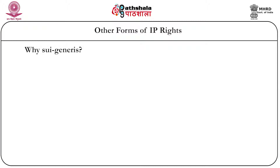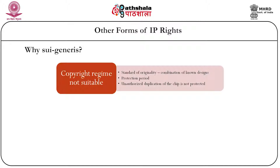But why sui generis for semiconductor chips? The copyright regime seems unsuitable. The standard of originality required for copyright law is distinct from that required for semiconductor chips, where originality involves a combination of known designs. The protection period under copyright — life plus 60 years — is seemingly high, whereas semiconductor chips have a low shelf life. Unauthorized duplication of the chip is largely not protected, and there also exists the idea-expression dichotomy in copyright which can hamper protection for semiconductor chip design.